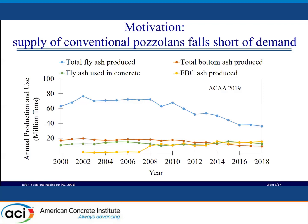Supplementary cementitious materials have been used in concrete to improve durability, sustainability, long-term strengths, and reduce the overall cost of the application. As you can see in the figures, since 2008, the production of coal fly ash in the United States has declined by more than 60 percent due to coal power plant closures and conversion to natural gas fuels. In addition, the majority of high quality fly ash has been used in concrete. As such, there is a significant and urgent need to identify and evaluate reliable sources, and calcined clays have shown to be promising.